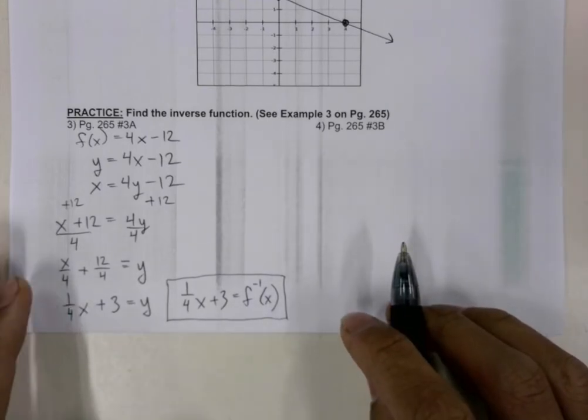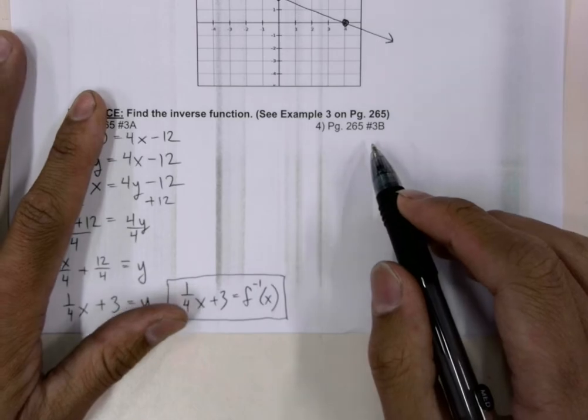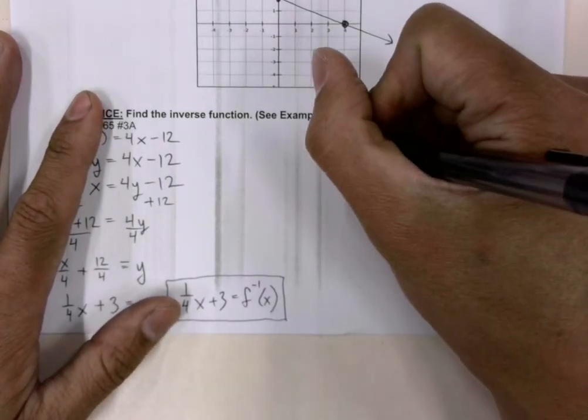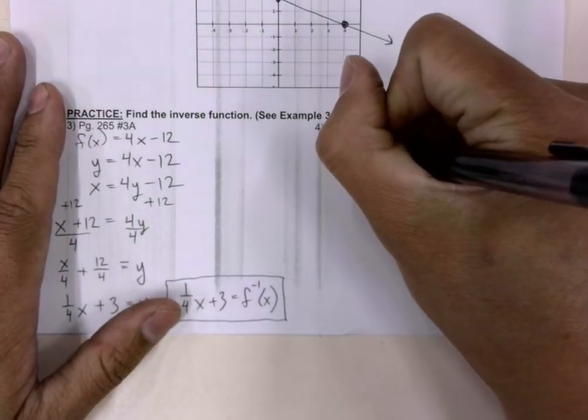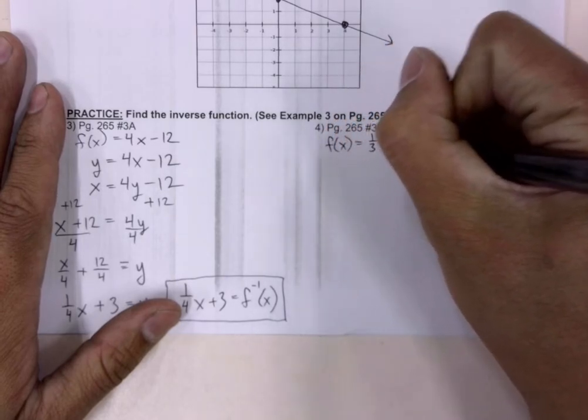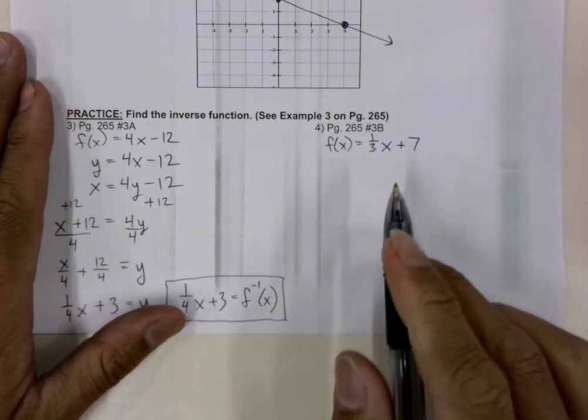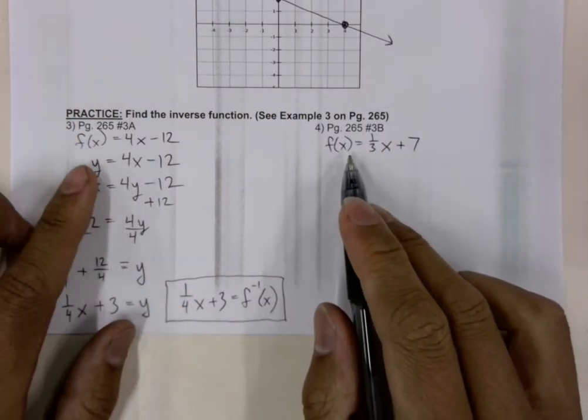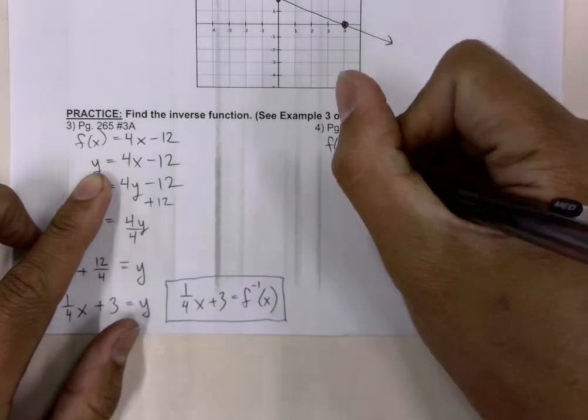Let's go ahead and do that again for part 3b. Our original function is f of x is equal to 1 over 3x plus 7. And our first step is we're going to replace f of x with y.